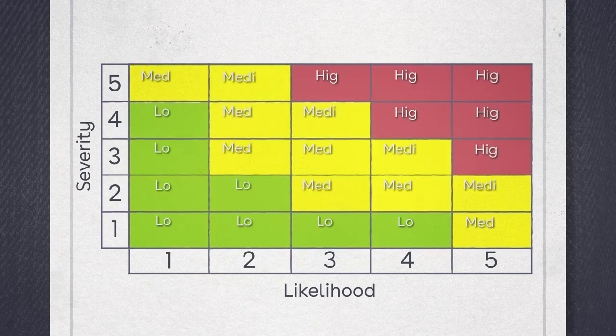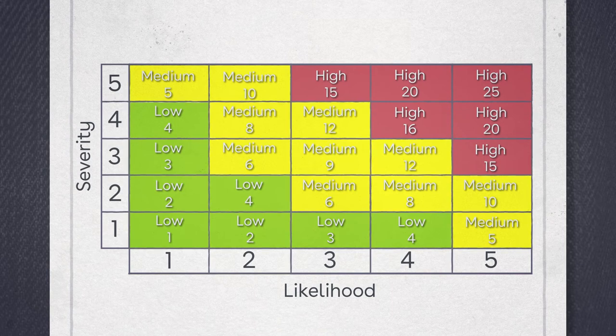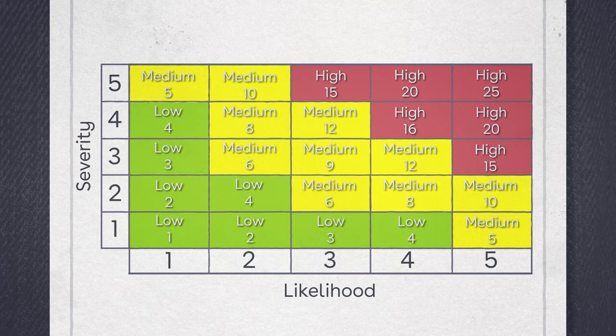You then multiply the two values together. It's really important to remember to multiply and not add the numbers. You then need to plot your hazard on the matrix to see if it falls in the low, medium or high risk area.